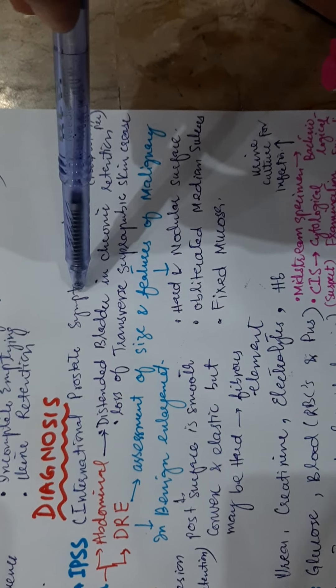In urine test, glucose, blood like RBCs, and pus cells are seen in urine examination. Midstream specimen is used for bacteriological examination and urine culture for infection. In the suspicion of carcinoma in situ, cytological examination of the urine is performed.